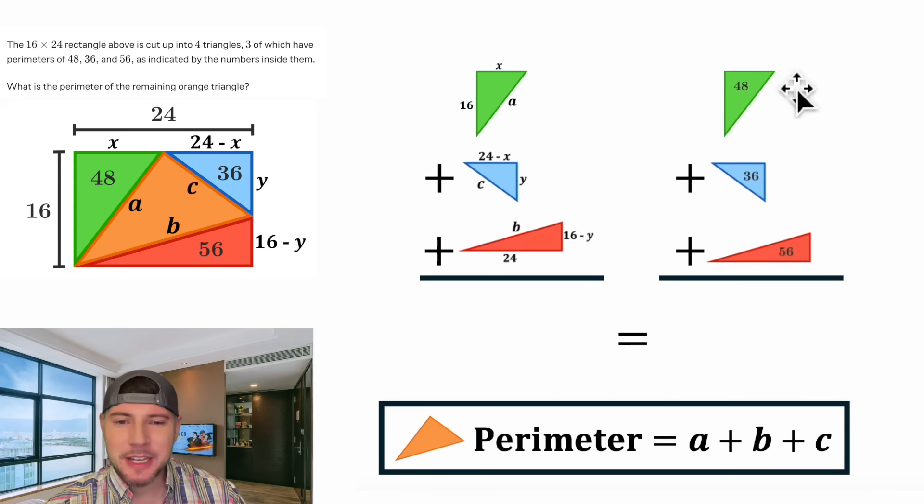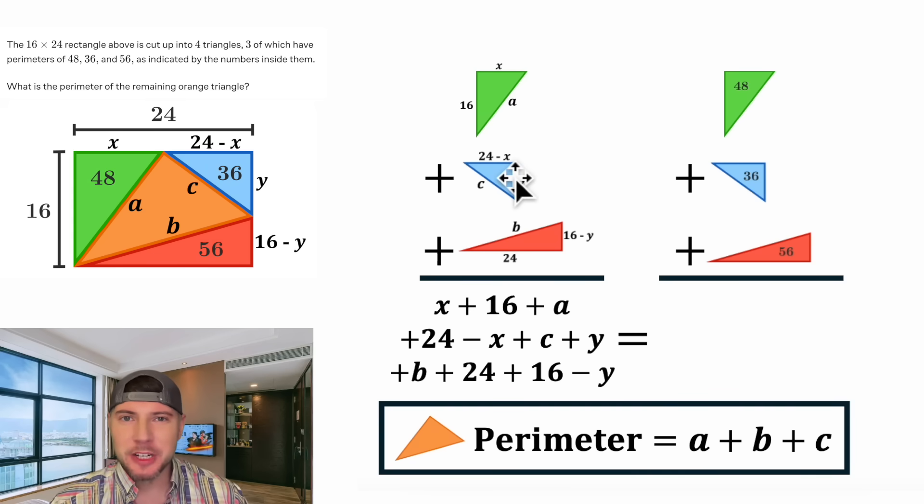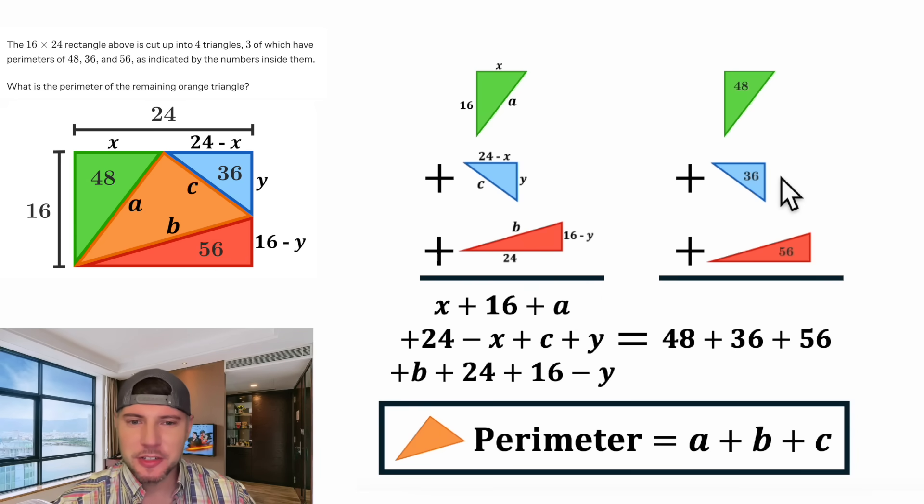Now, if we add these up and add these up, the answers should be equal to each other. So on the left-hand side, we're going to add up all the sides. X plus 16 plus A plus 24 minus X plus C plus Y plus B plus 24 plus 16 minus Y. And then on the right-hand side, we're going to add up the perimeters, 48 plus 36 plus 56.